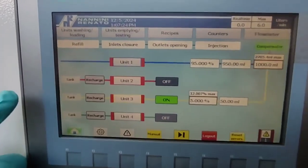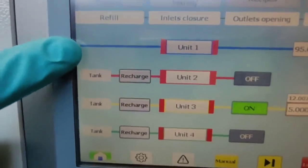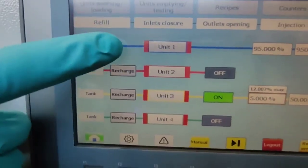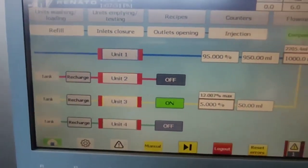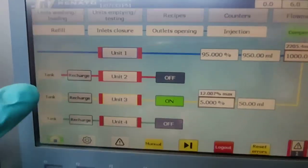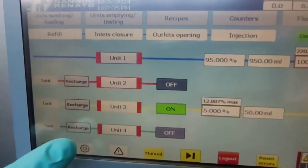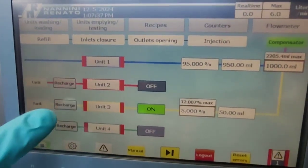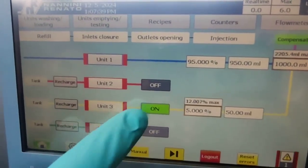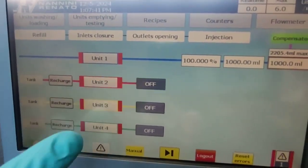The system is composed by a main unit which is blue in this case, unit one, which does the base product. And you have three additives units, unit two, three and four, which can be enabled or disabled at your convenience.